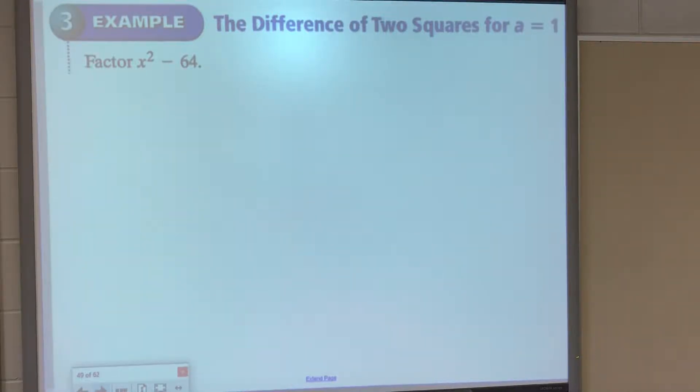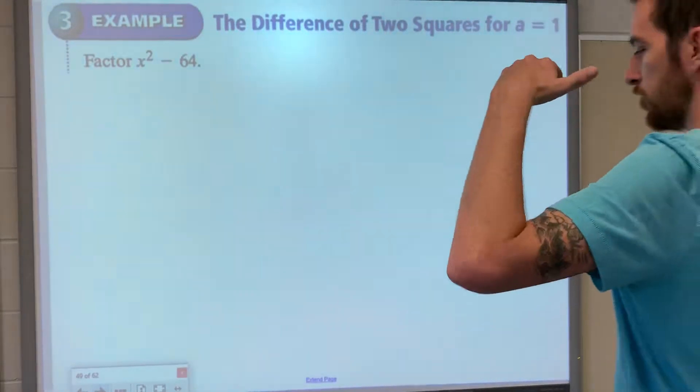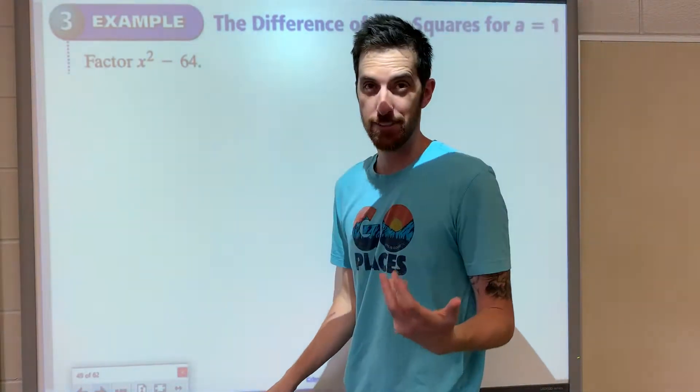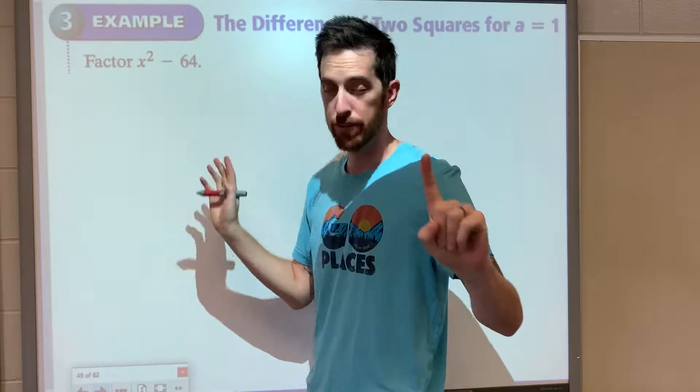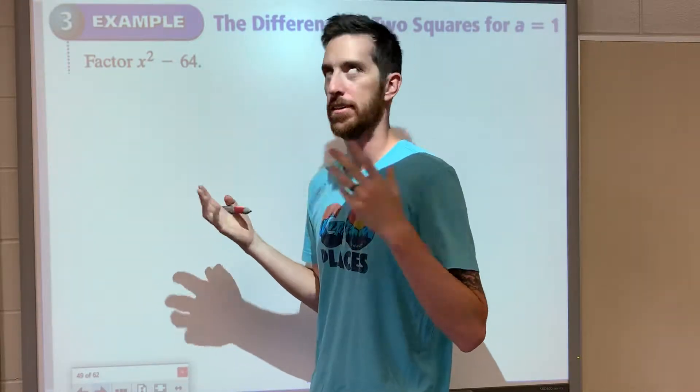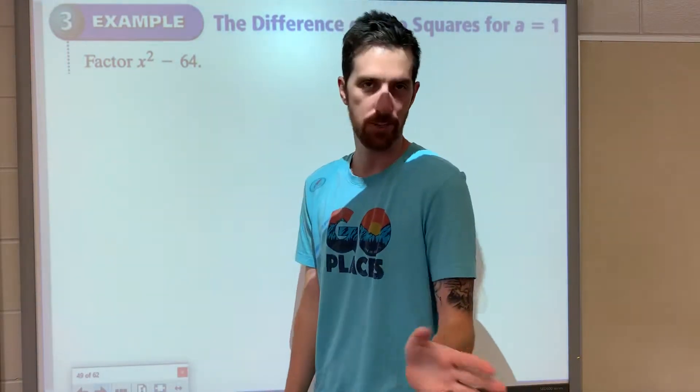Factor x squared minus 64. You should be able to recognize this is a difference of squares problem. Always check for a greatest common factor. There isn't one, except for one, but I'm not going to keep saying except for one.